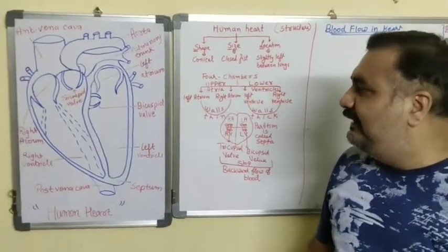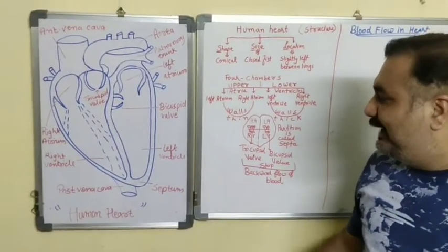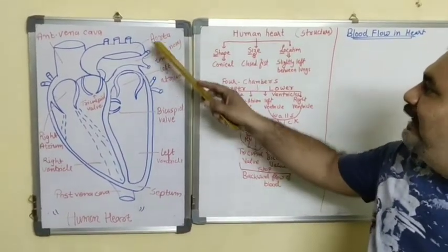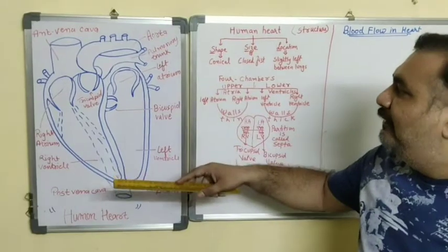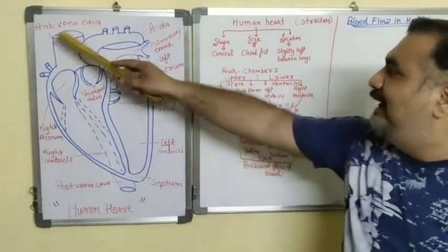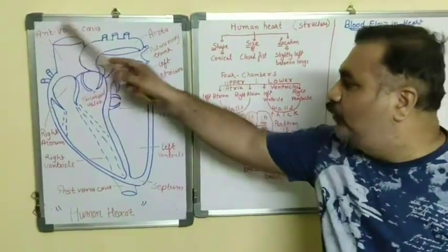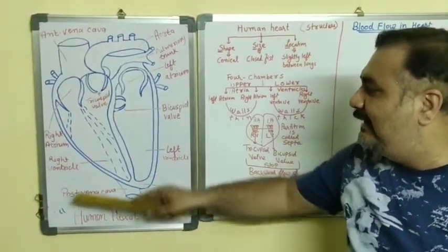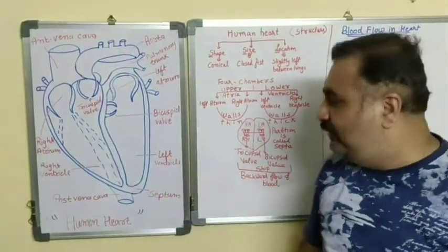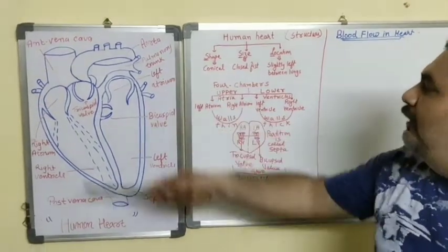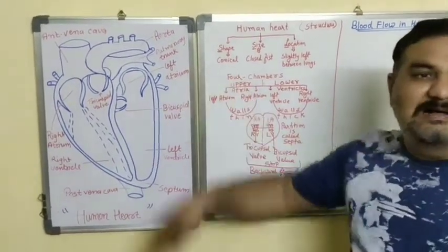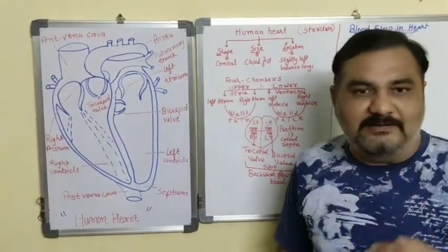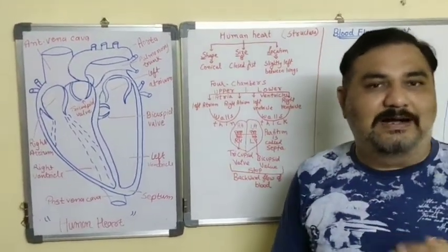In the structure of heart, we also have other important parts: pulmonary veins, aorta, and venacavas. There are two venacavas - superior and inferior, also known as anterior and posterior venacavas. These are all parts of the heart which are to be studied in detail in the blood flow topic.